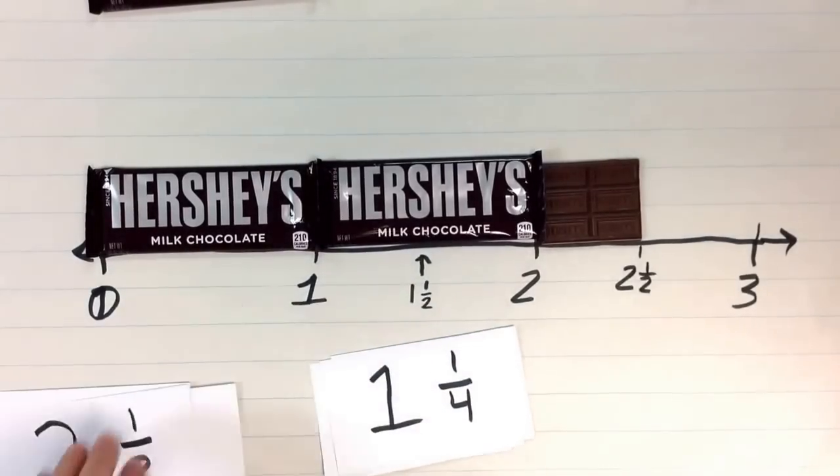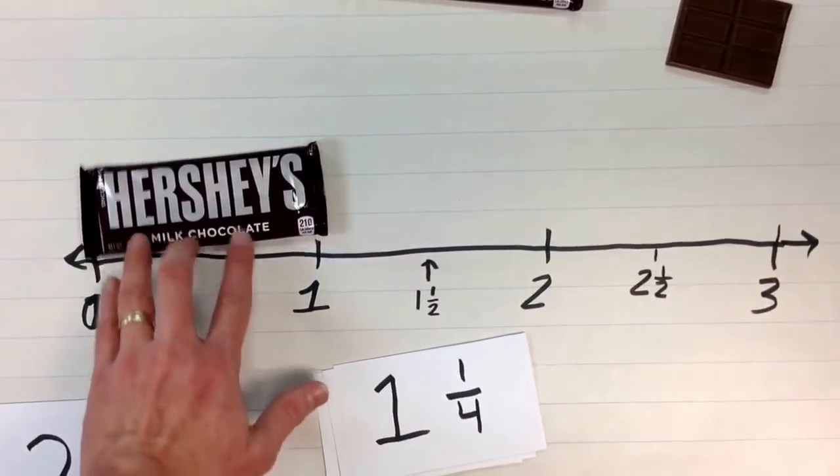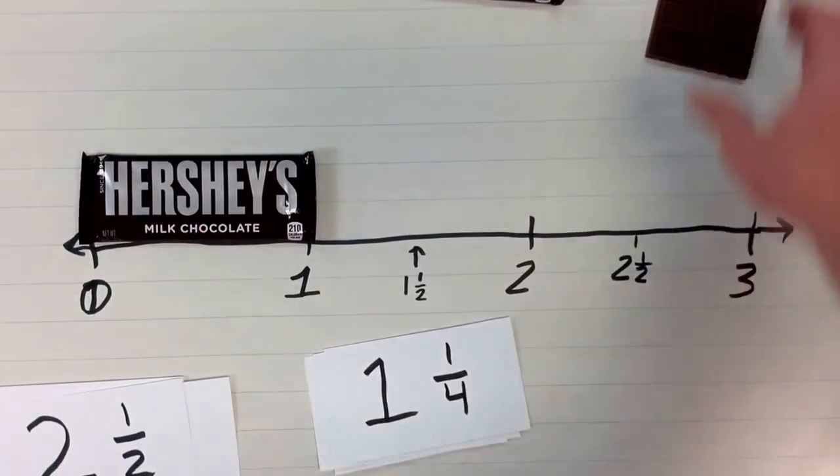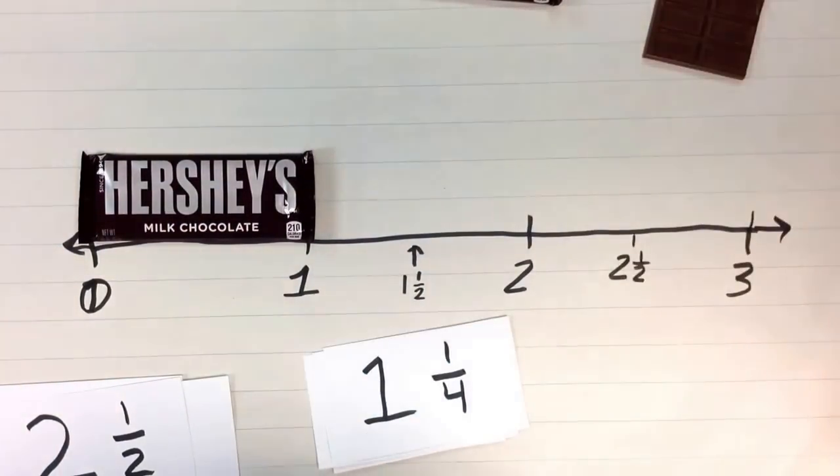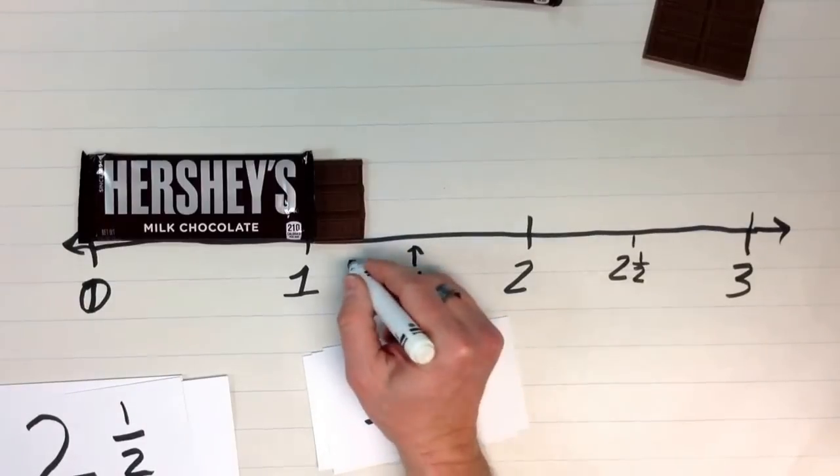Let's try another one. If we had one and one fourth, well, we would fill up between the zero and the one for one, and then we would end up with one fourth of a candy bar in between. That would be halfway between the one and the one half. One and one fourth candy bars.